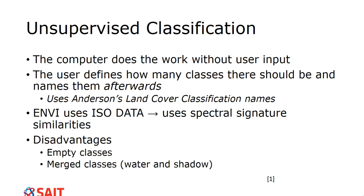ENVI uses something called ISODATA for unsupervised classification. It works by looking at spectral signature similarities, diving into the data and using iterations to get its answers. It's quite accurate and relatively fast, though larger images slow it down. Disadvantages include ending up with empty classes and merged classes.